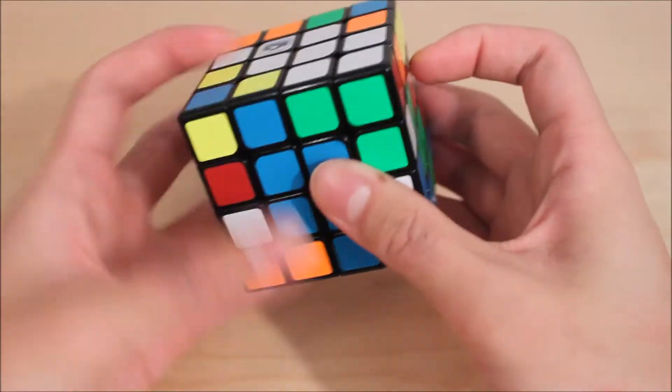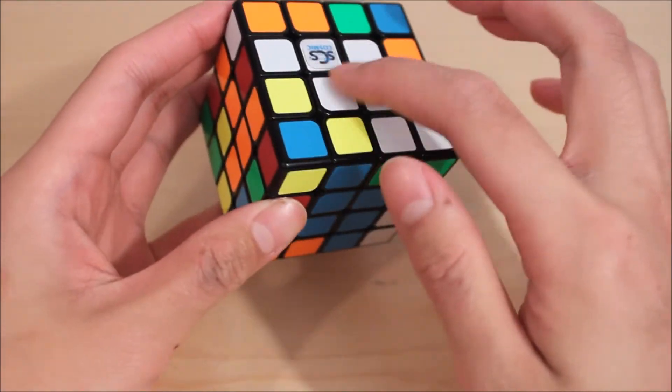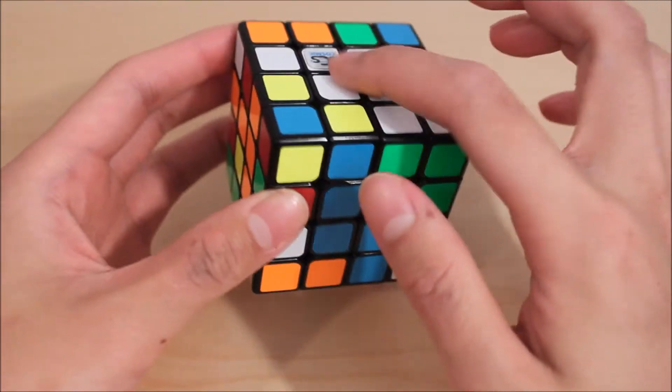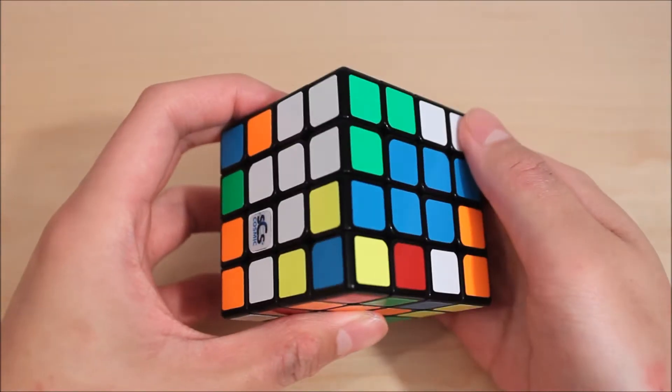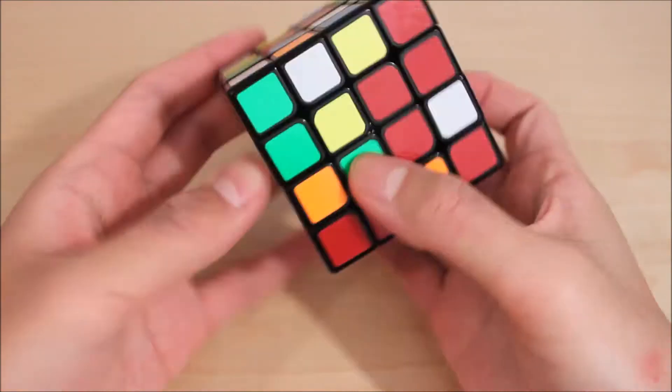There are a lot of tricks that make this much easier. First off, the general rule is that after you build two adjacent centers, the parity state of the cube will not be changed for the rest of the solve. Knowing this, your job is just to solve two adjacent centers into an even state of parity. There are three main methods for getting the cube into this state.